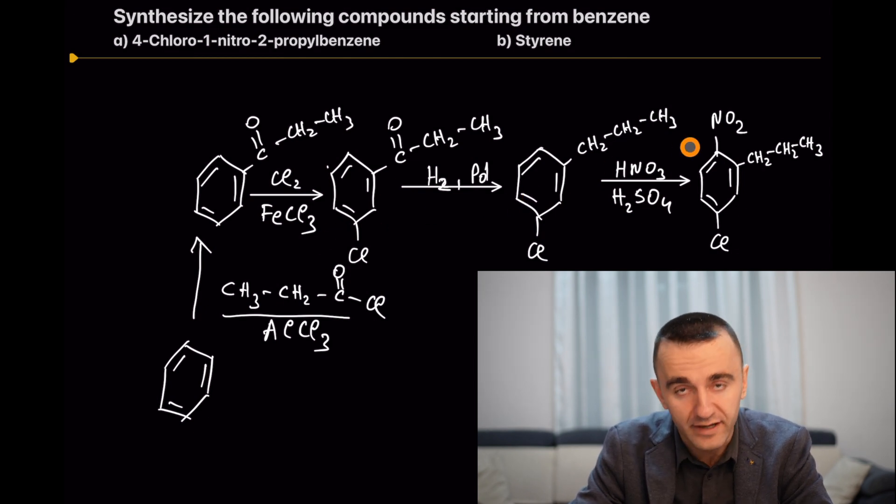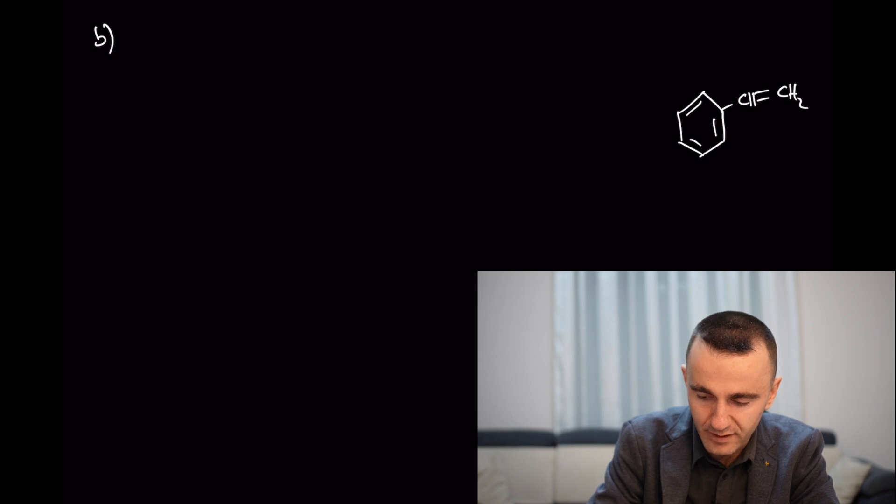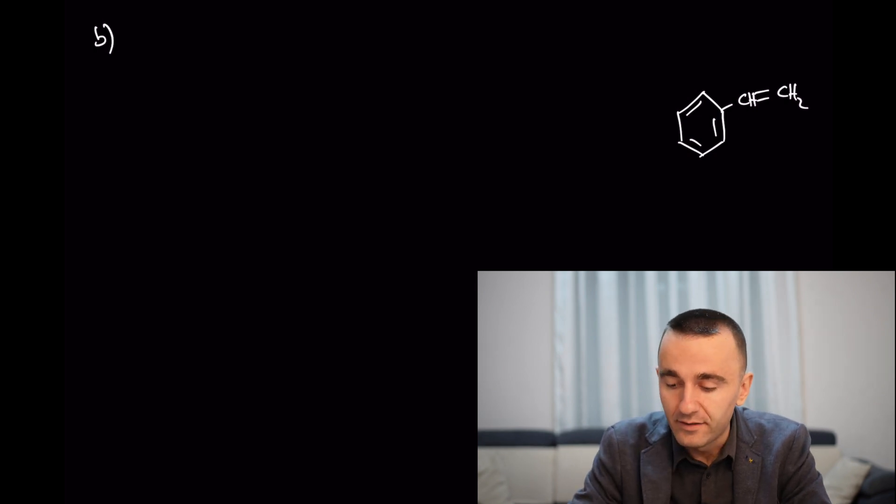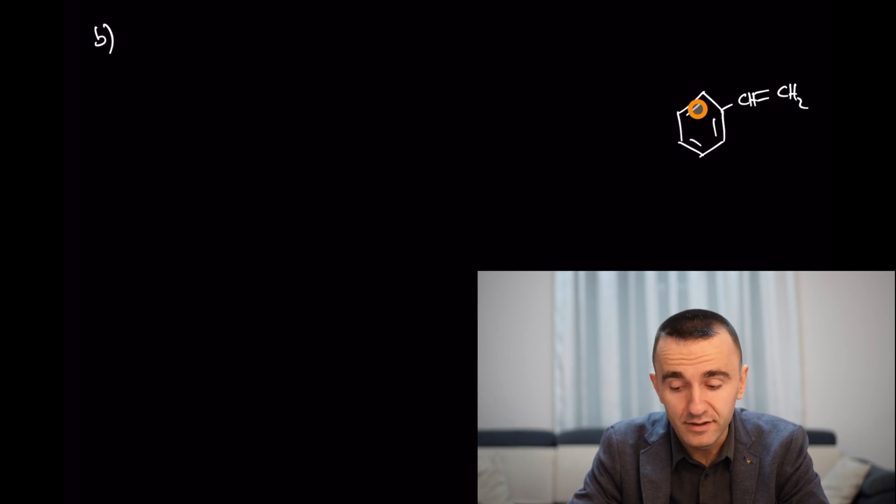Let's move to point B: styrene. This compound contains a double bond and hydrogens to fill the four bonds for the carbon. How are we going to synthesize this compound starting from benzene?